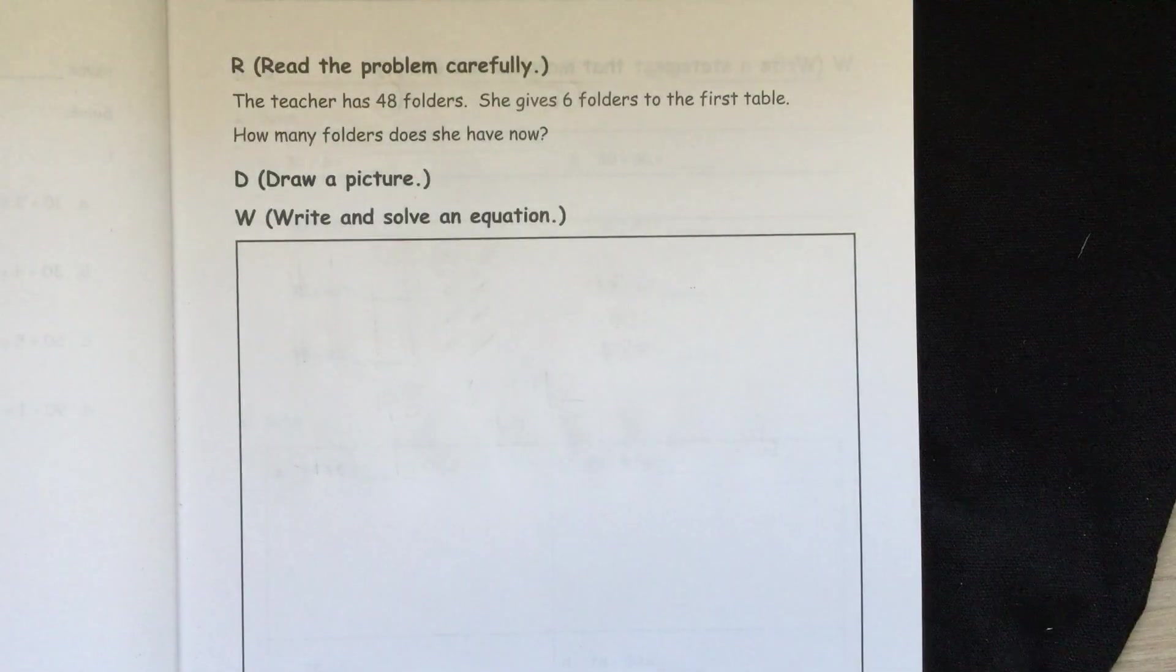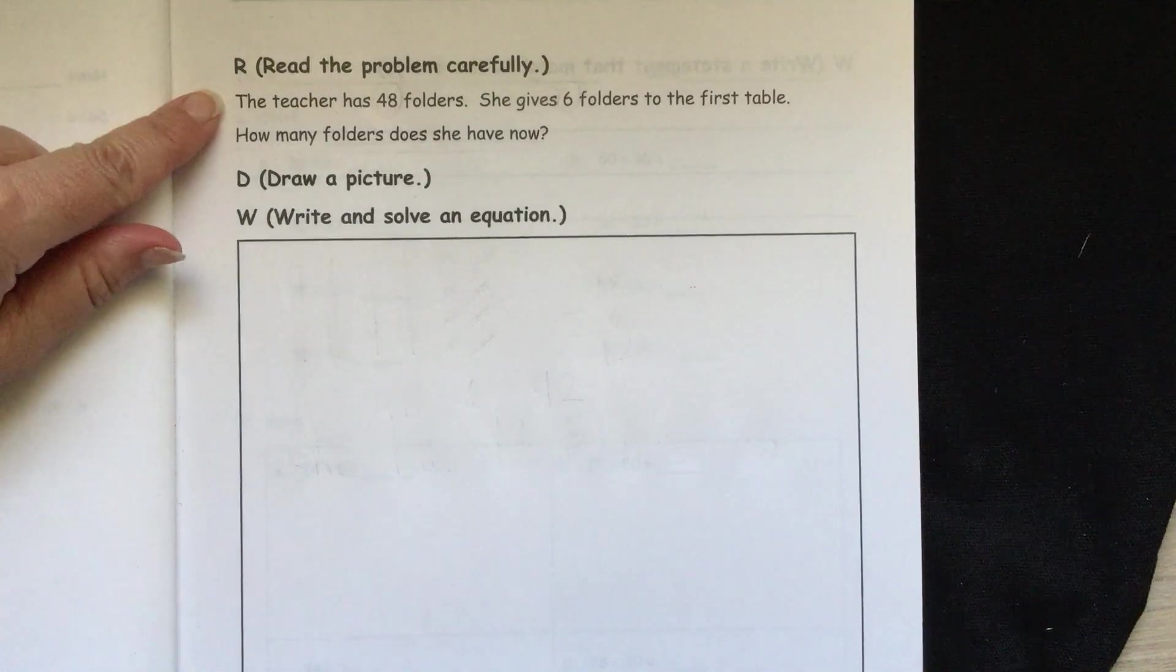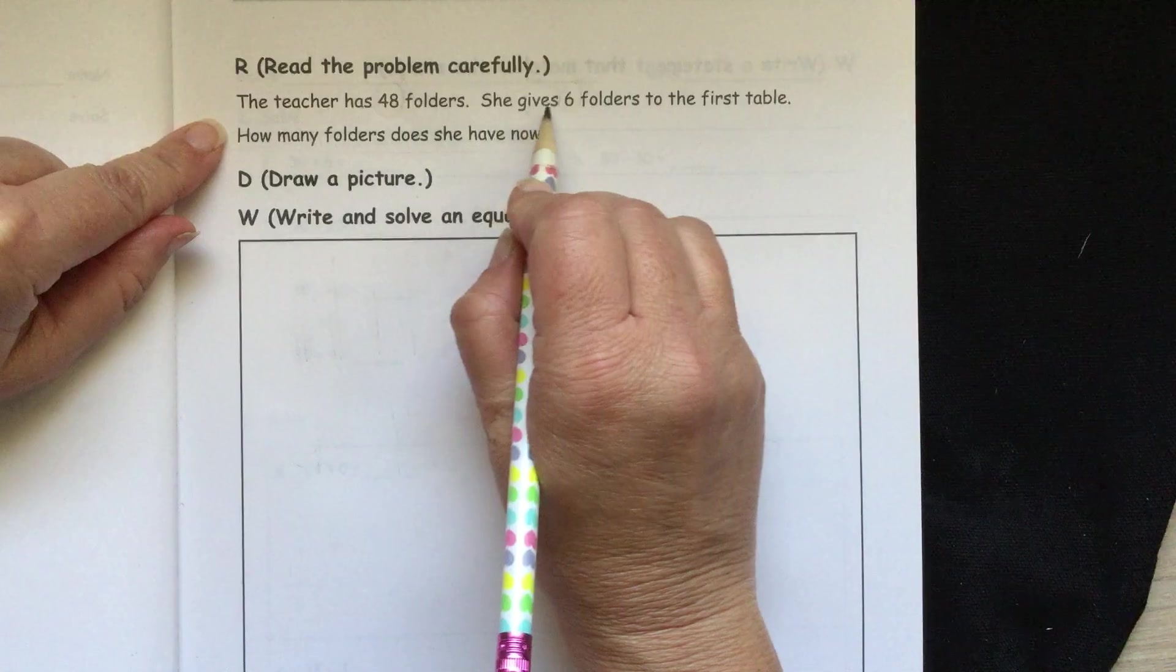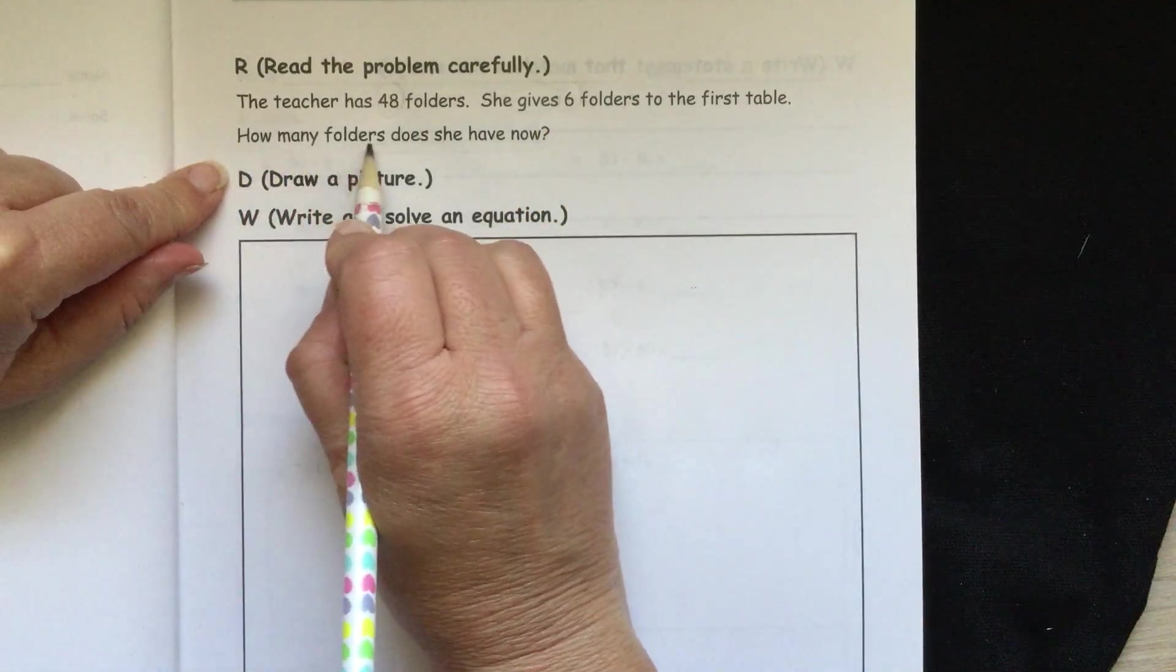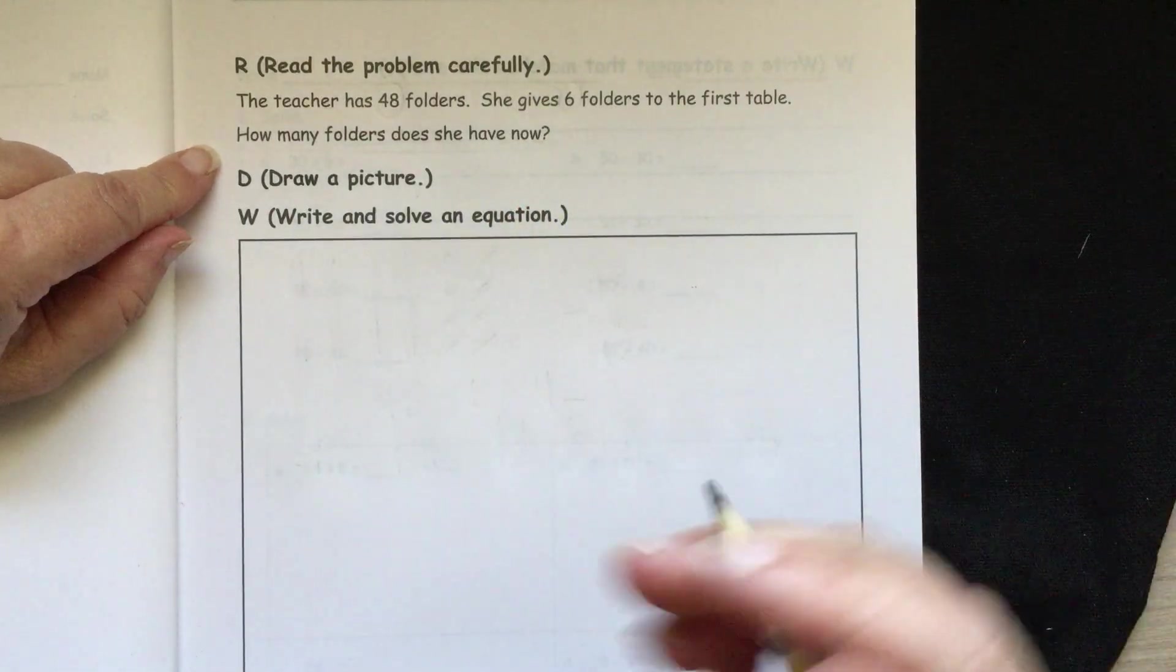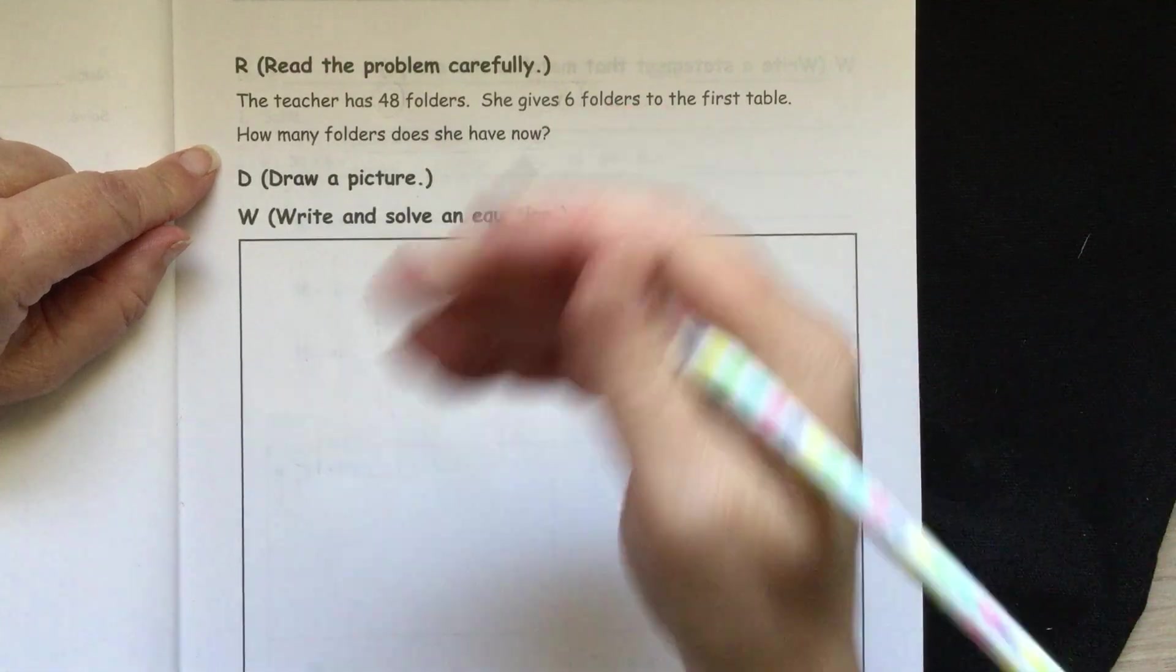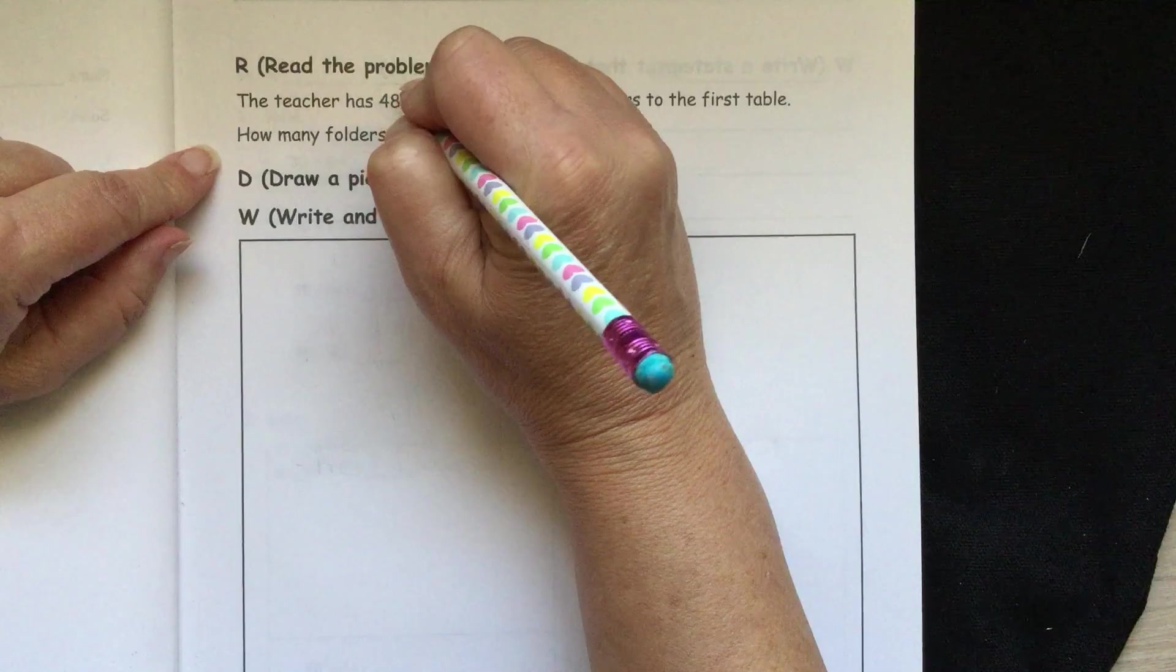We're going to start with an application problem and we'll use our read, draw, write method. So first we'll read. The teacher has 48 folders. She gives 6 folders to the first table. How many folders does she have now? So we need to circle our key information.